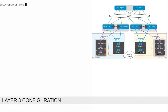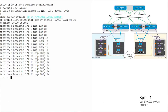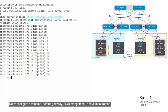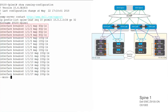Initial configuration steps common for all switches in this deployment example include setting the hostname, default gateway, and configuring the out-of-band management interface. Configure support for jumbo frames by setting the MTU to 9216. On the spine switches, the speed is set to 40 gig on the interfaces connecting to leaf switches. This applies to both Layer 2 and Layer 3 deployment examples.